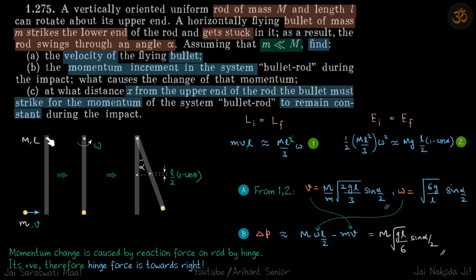We have this rod which is hinged on the top and a small particle hits it at the bottom and sticks to it. Naturally, the rod will start to turn, and as a result it goes to a maximum angle of alpha.